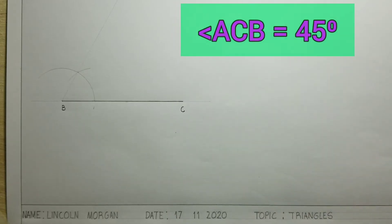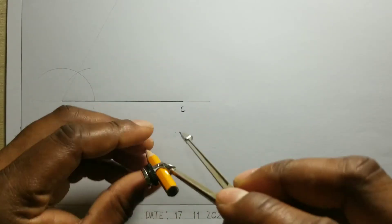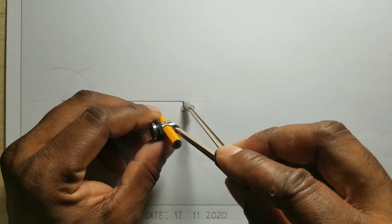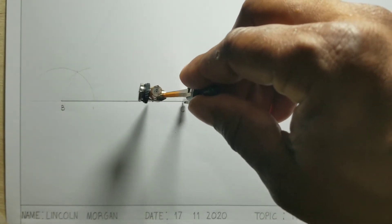So in order to construct the 45 degree angle, we need to put our compass at C and scribe a semicircle. The semicircle will start from the BC line.